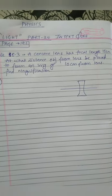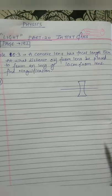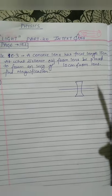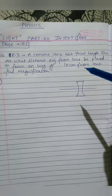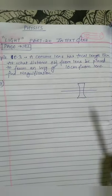The question I have written: A concave lens has focal length 15 centimeter. At what distance from the lens should we place an object to form an image at 10 centimeter from the lens, and find the magnification.